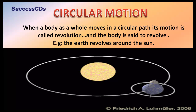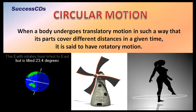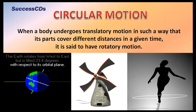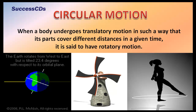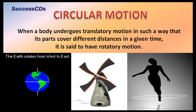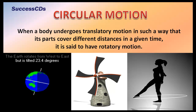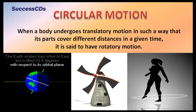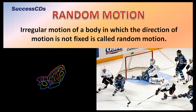When a body undergoes translatory motion in such a way that its parts cover different distances in a given time, it is said to have rotatory motion. Examples include the Earth's rotation around its axis, the blades of a windmill, and a dancer taking a turn. A regular motion of a body in which the direction of motion is not fixed is called random motion — for example, a flying butterfly and players in a field.